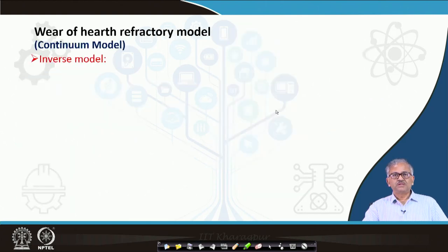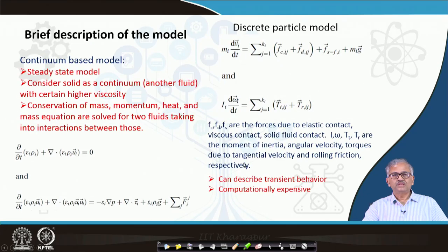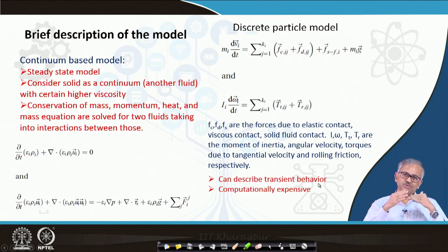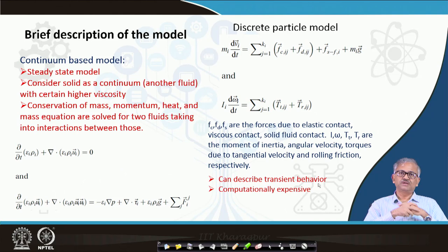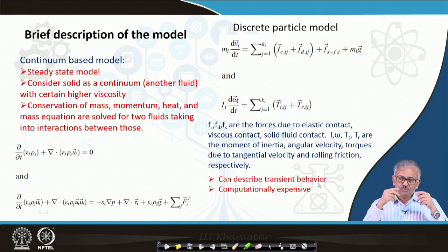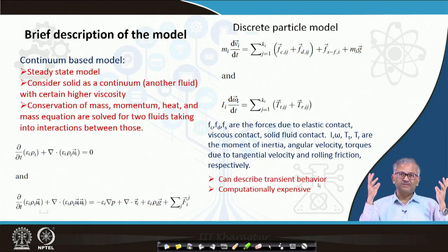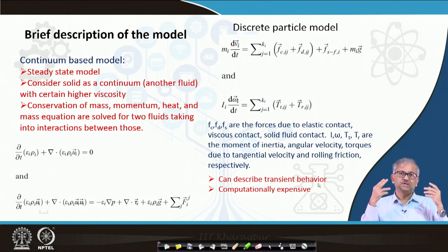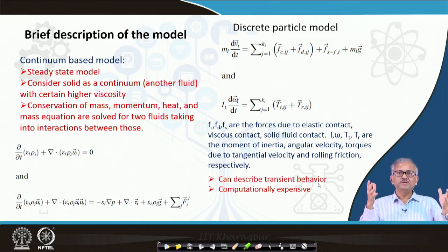That is the discrete particle model. Most importantly, it can describe transient behavior — in the blast furnace, how the cohesive zone evolves with time can be described. However, it is computationally expensive: if you want to do force balance on each particle, there may be billions of particles in the blast furnace, and for each and every particle we have to solve this equation. So it becomes computationally very expensive.